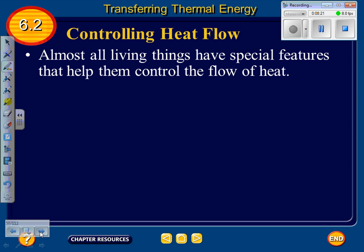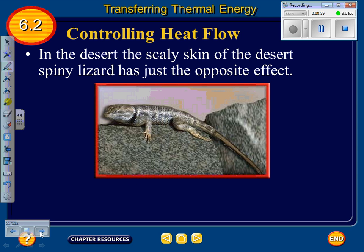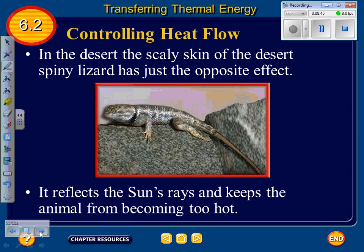Almost all living things have special features that help them control the flow of heat. For example, the Antarctic fur seal's thick coat helps keep it from losing heat, helping it survive in temperatures often below freezing. In the desert, the scaly skin of the desert spiny lizard has the opposite effect — it reflects the sun's rays and keeps the animal from becoming too hot.